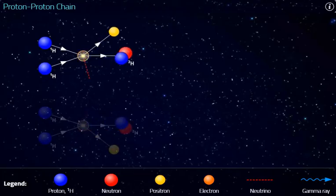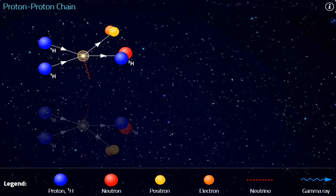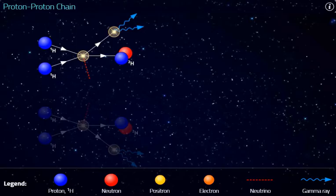In this reaction, a positron and a neutrino are emitted. The positron annihilates with an electron, and gamma rays are emitted. The neutrino escapes the sun.